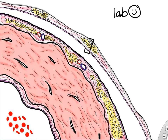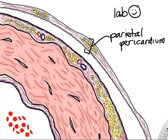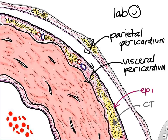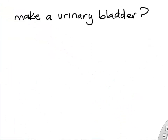Just to remind you about lab: if we draw the heart wall and add a plastic bag around it, we'd have the parietal pericardium. We already drew the visceral pericardium — that was the single cell layer epithelium on the outside and the connective tissue underneath it.